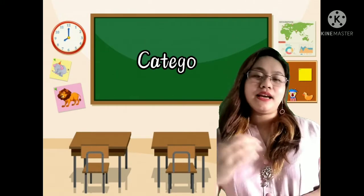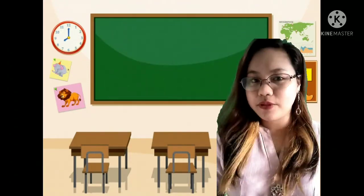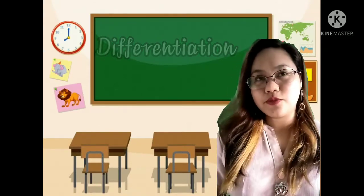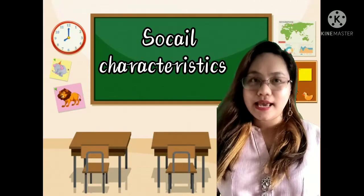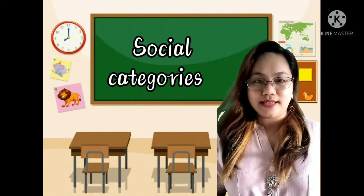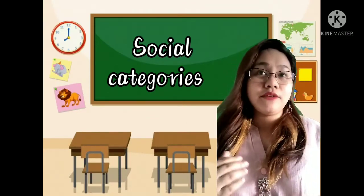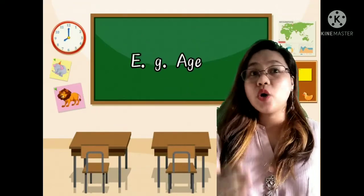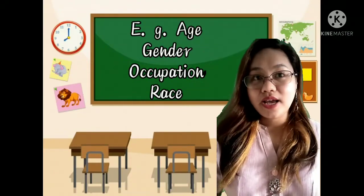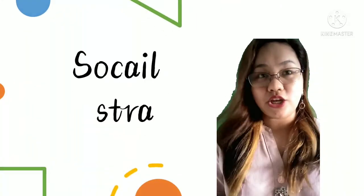Did you know that the categorization or classification of the different groups within the society comes from the word differentiation? Differentiation is the method of relating people in terms of certain social characteristics and then classifying them into social categories based on their characteristics. It does not involve ranking. For example, we tend to differentiate people according to their gender, occupation, education, age, race, and others. This has led to the rise of social stratification.